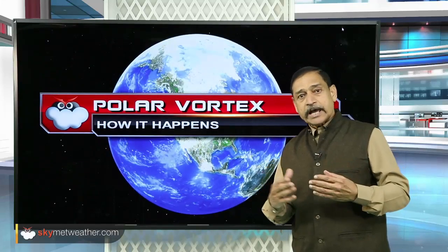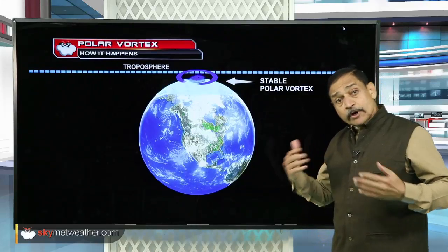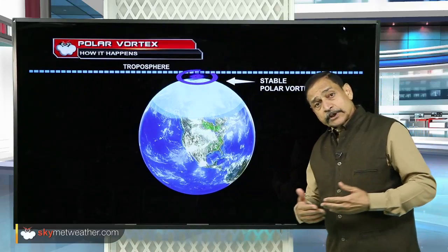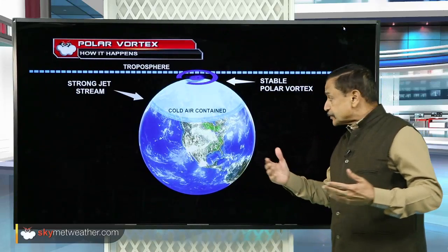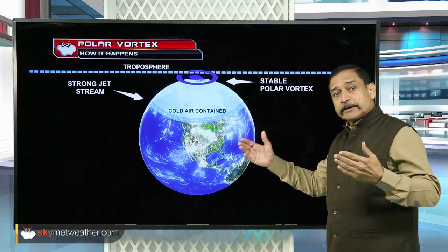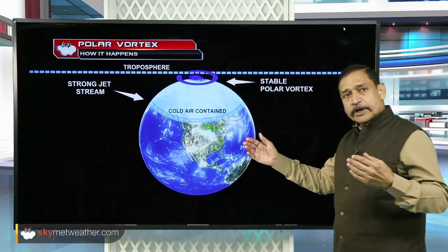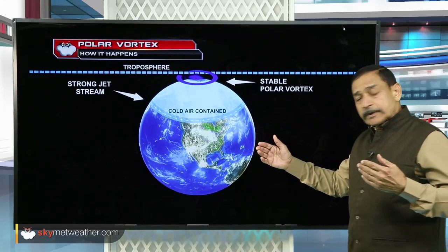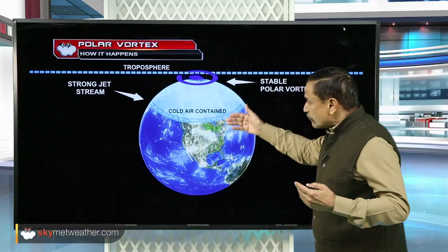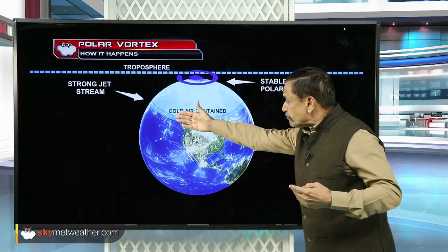Now we see how it happens. The polar vortex is actually a swirling, extremely cold air moving in an anticlockwise direction in the Northern Hemisphere.